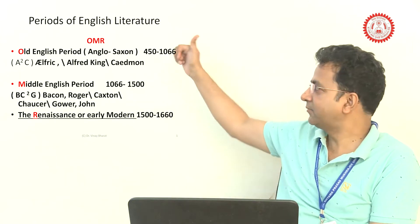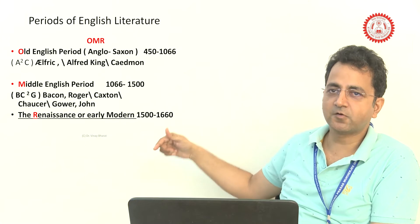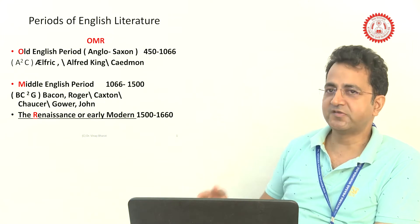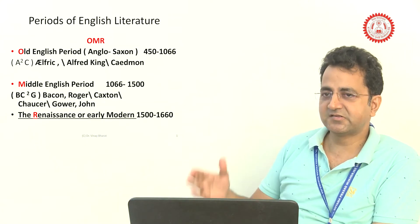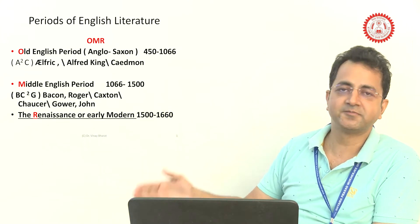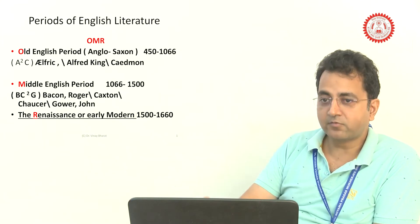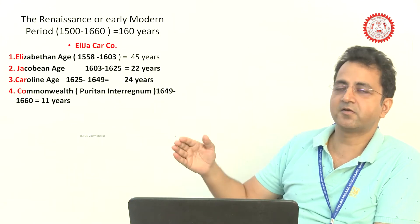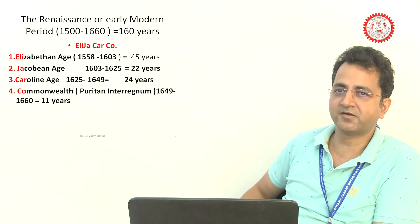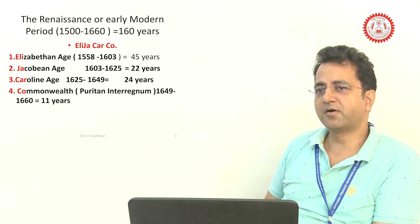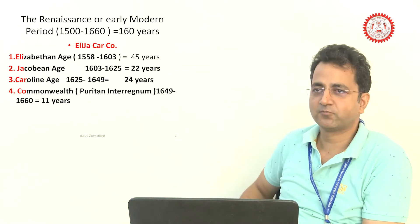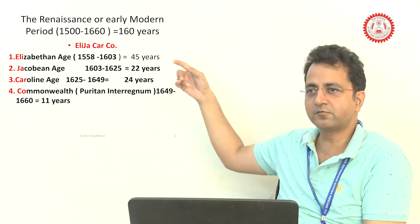The last letter R of OMR stands for Renaissance or Early Modern period, which begins from 1500 to 1660. So OMR covers Old English, Middle English, and the Renaissance or Early Modern period. The Renaissance covers 160 years from 1500 to 1660, and there are four different ages under it.